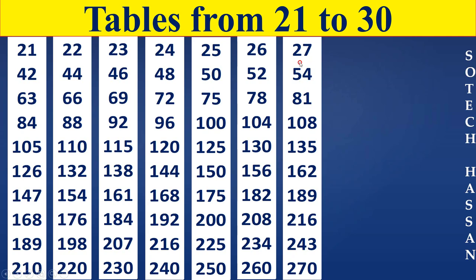27th Table. 27×1 is 27. 27×2 is 54. 27×3 is 81. 27×4 is 108. 27×5 is 135. 27×6 is 162. 27×7 is 189. 27×8 is 216. 27×9 is 243. 27×10 is 270.